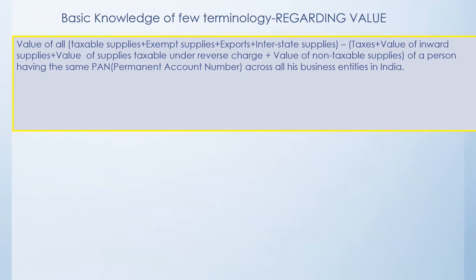A person having the same permanent account number across all of India — all transactions will be considered. So even if you are having a turnover of say 10 lakhs in Maharashtra, 5 lakhs in Delhi, 5 lakhs you are exporting goods, and another 5 lakhs are goods which are exempted from tax, then all these 25 lakhs will be considered for registration in Maharashtra, Delhi, or any other place. The total turnover has to be considered and treated as an aggregate value.